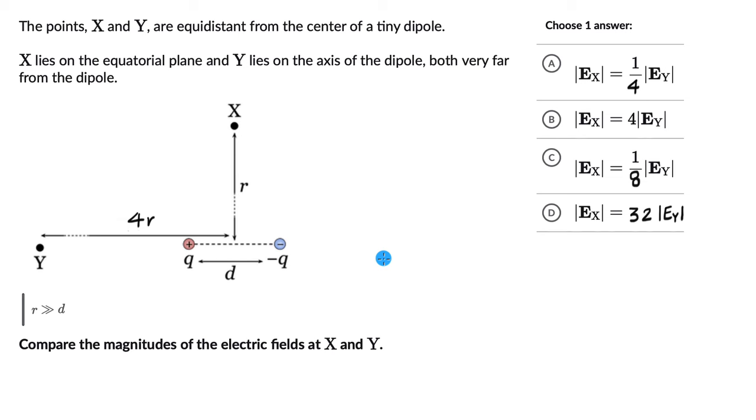Let's solve a question on electric field due to dipoles. We have two points X and Y which are equidistant from the center of a tiny dipole. X lies on the equatorial plane and Y lies on the axis of the dipole, both very far from the dipole.